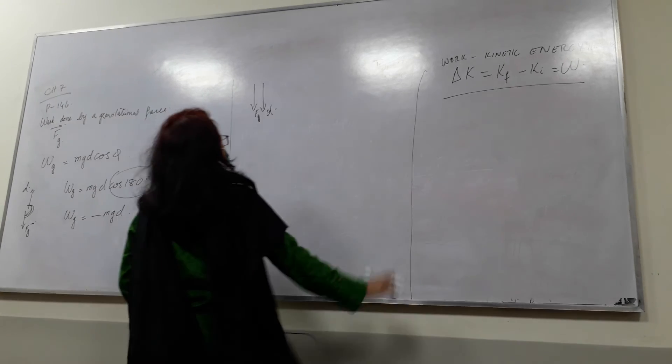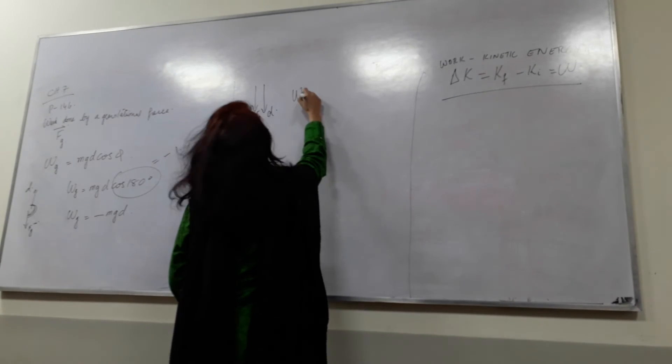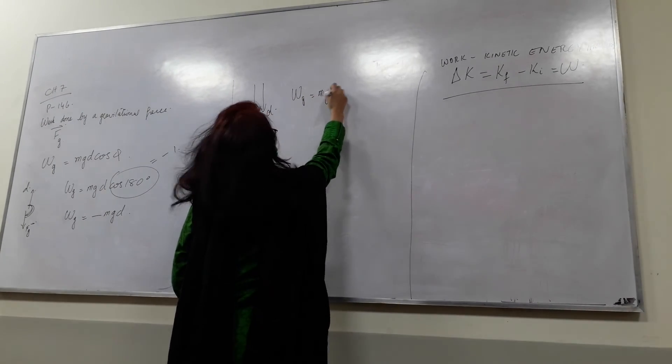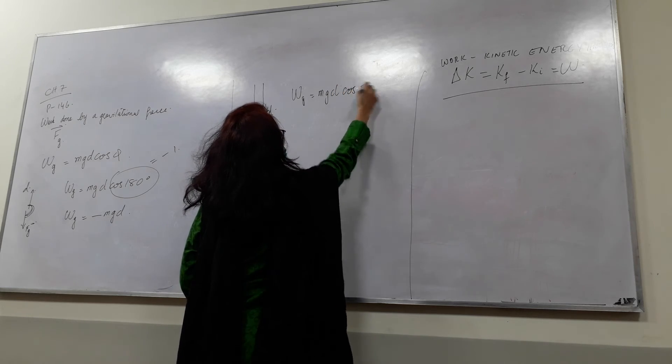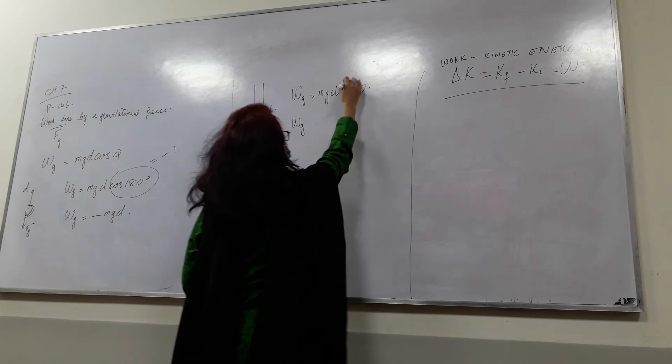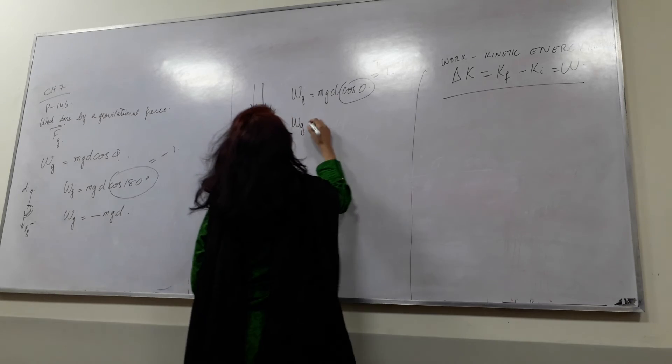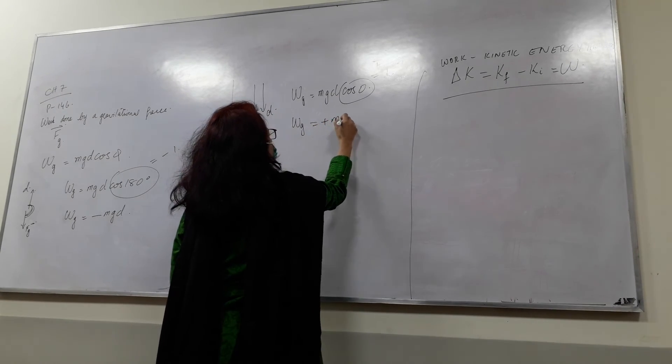So you can write the equation as Wg equals mg d cos of 0. So this is equal to—cos 0 is equal to 1. Then Wg is equal to plus mg d.